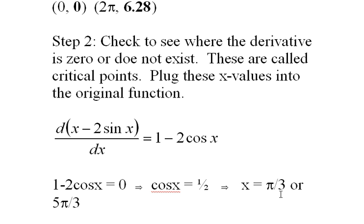And we get two values, two possible values between 0 and 2π: π/3 or 5π/3, when we solve this trig equation. That comes from setting this derivative to 0.